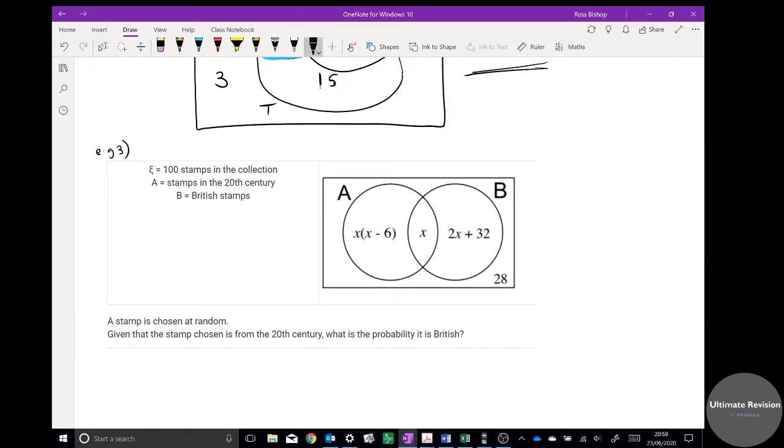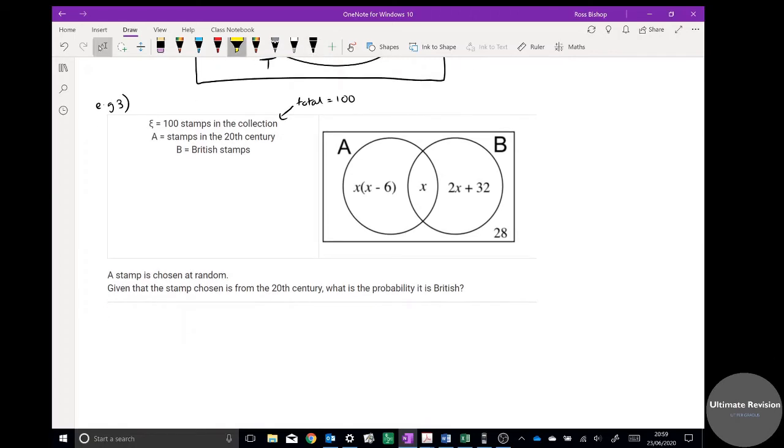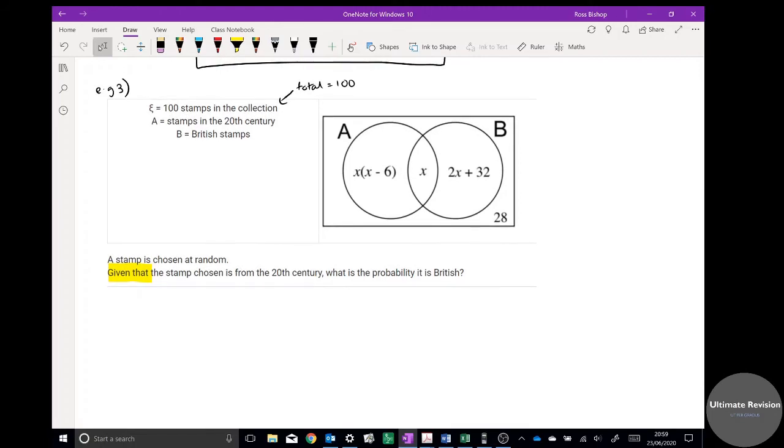This is example 3. It says this squiggly E symbol, that's like an epsilon, equals 100 stamps in the collection. That just means the total equals 100. And A is the stamps that we've got 21st, 20th century there, and British stamps, and there's an overlap there. And it's another given that question. Given that the stamp is chosen from the 20th century, what is the probability that it's British? We'll come to that in a minute. I think we need to find out what x is first.